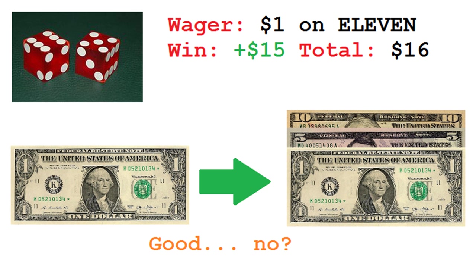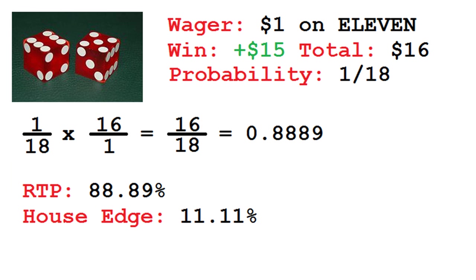There are 36 possible combinations for two dice. Of those 36 combinations, only two of them make a total of 11. The probability that you will roll an 11 is therefore 2 over 36, or 1 over 18. Multiply that probability by the $16 payoff, and you get a return of 16 over 18, which translates to a return of 88.89%, or a house edge of 11.11%.